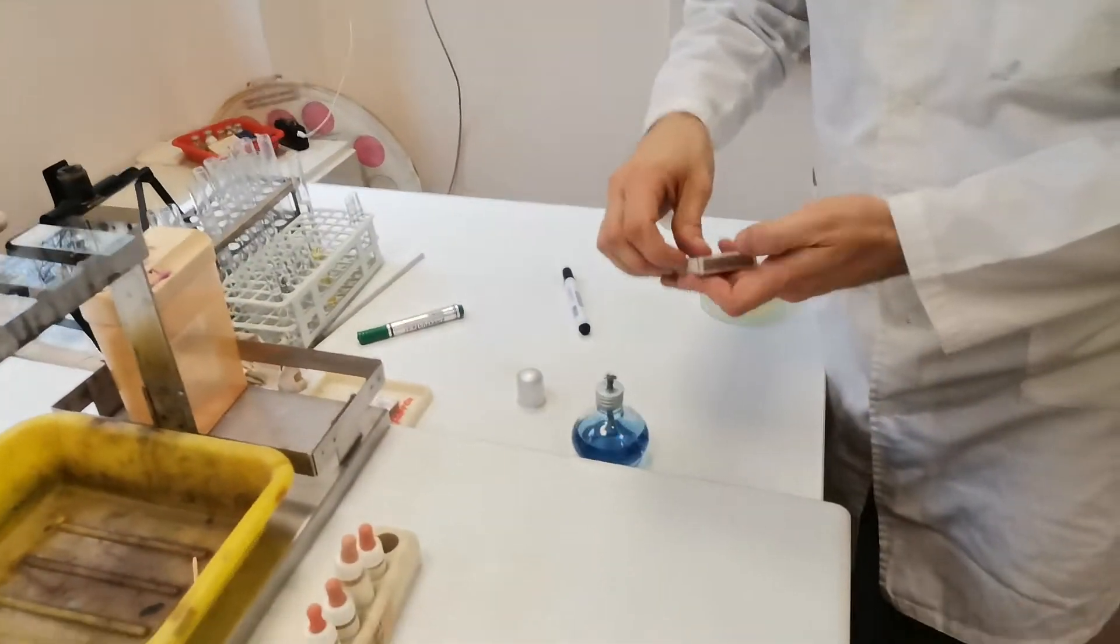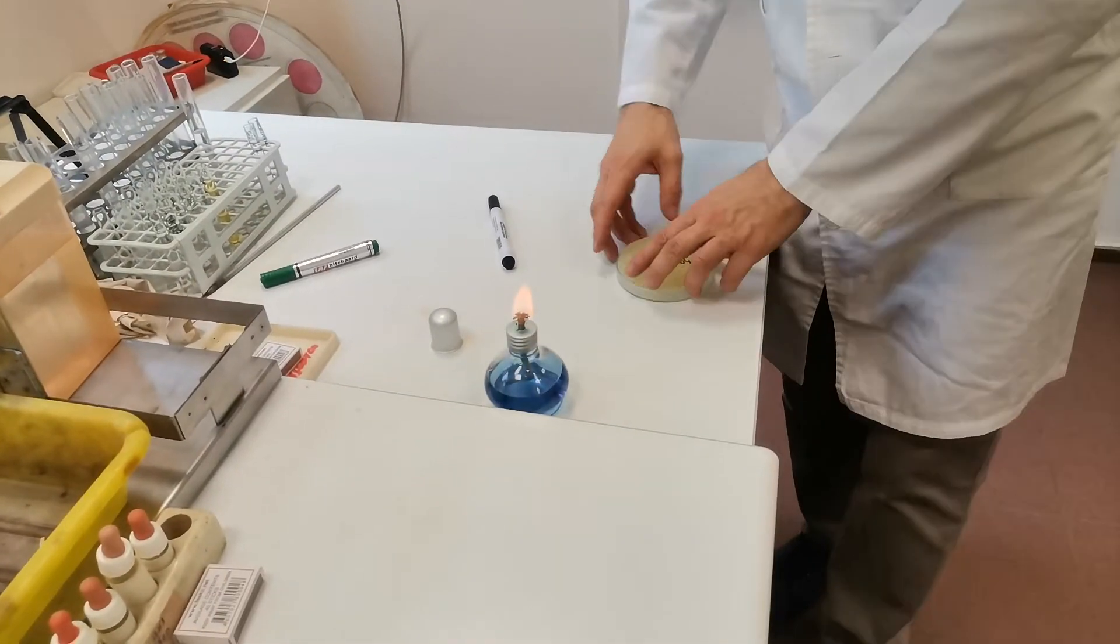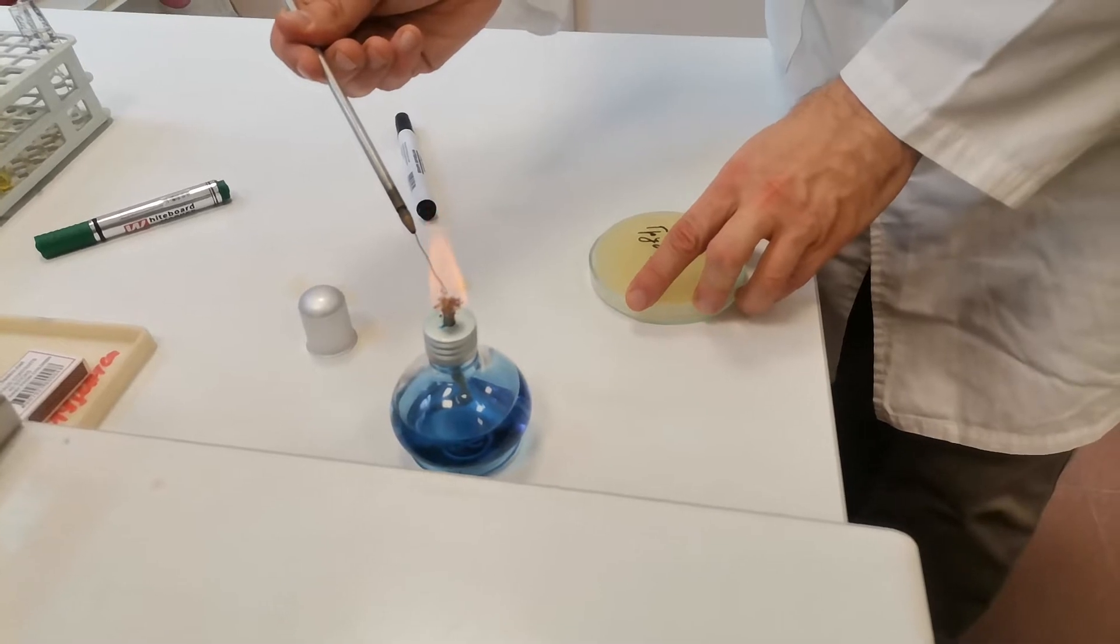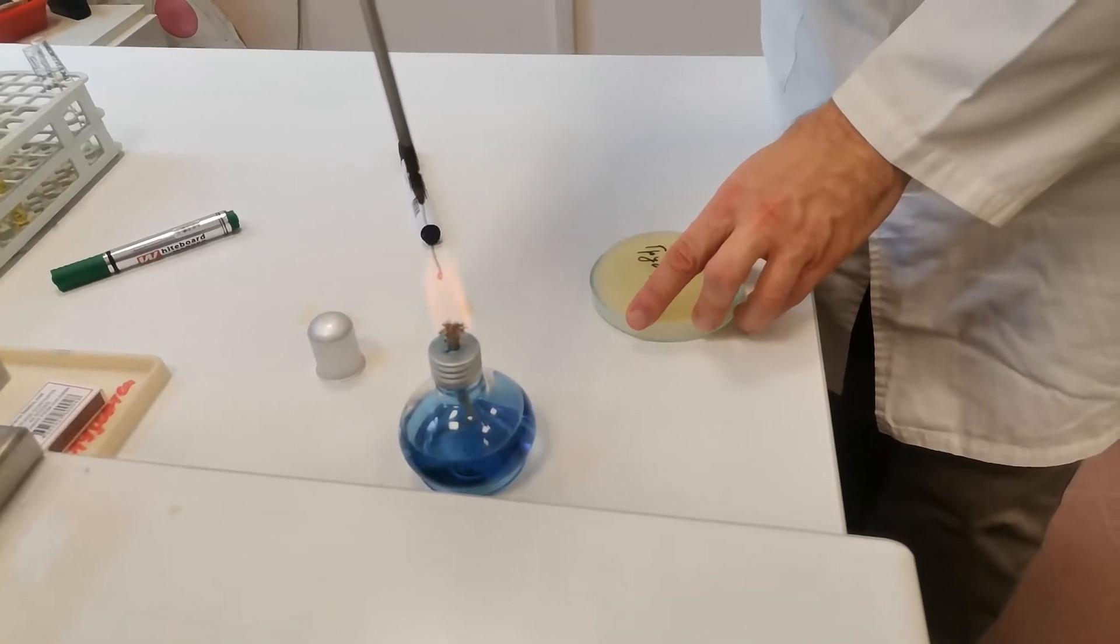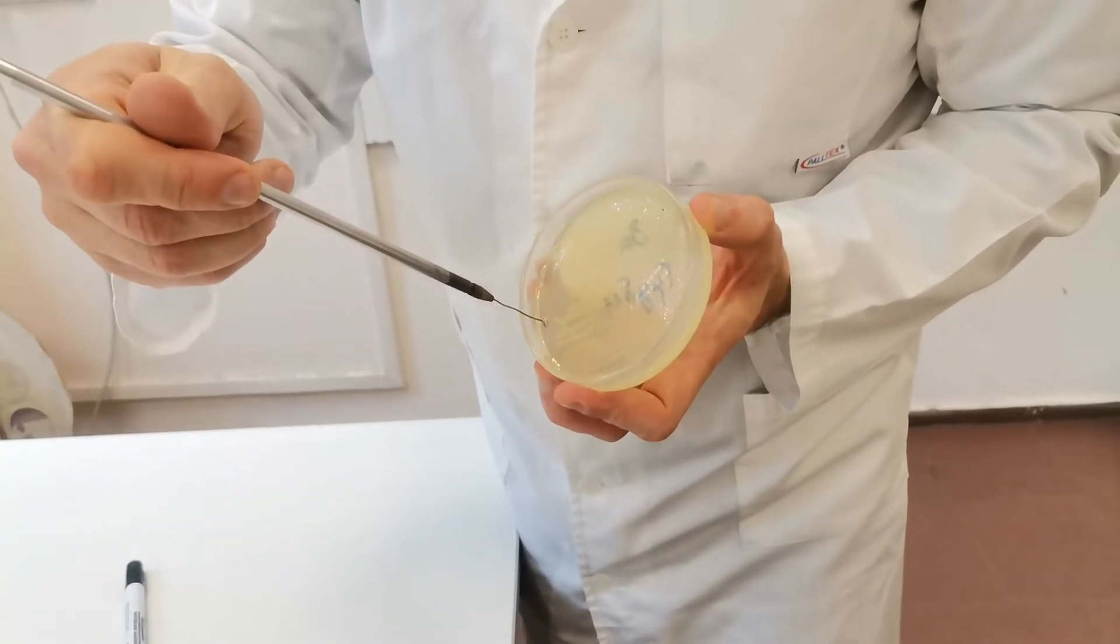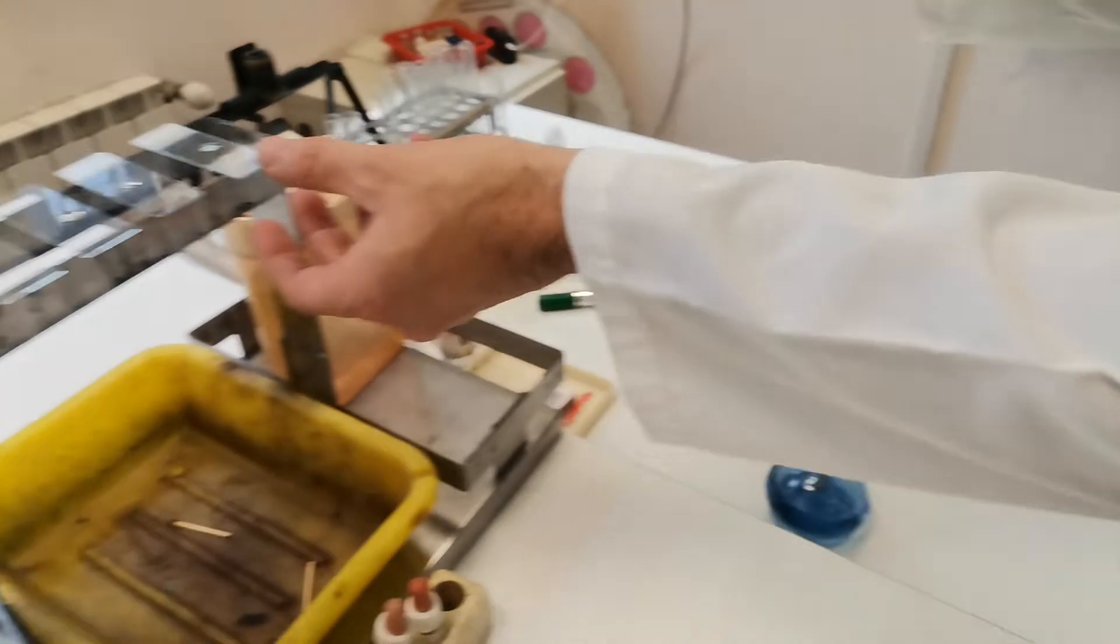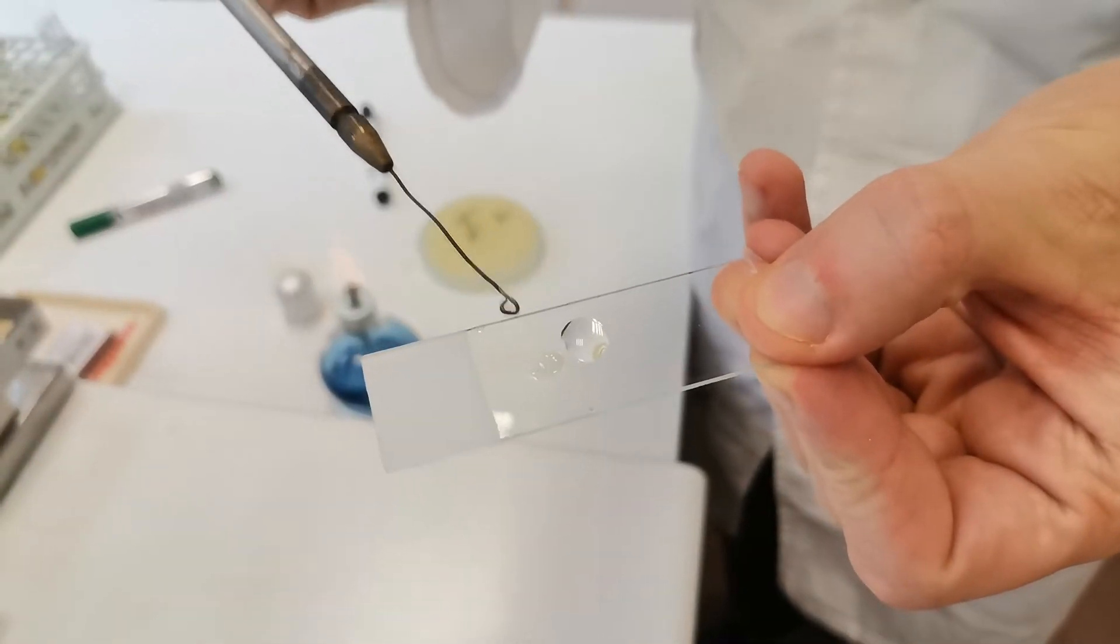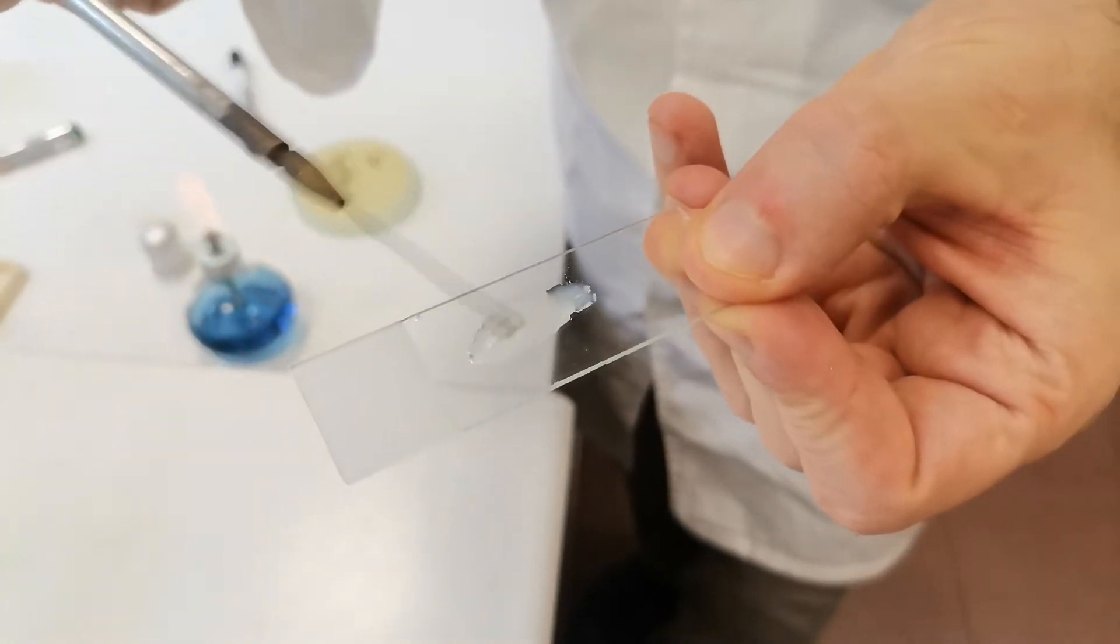Next, I need to start the burner. Sterilize the loop by holding it first in the lower part of the flame where it is cooler and then holding it vertically in the upper, hotter part of the flame until the wire turns red. Then, it must be cooled down by pressing into the agar. Then we will take some of the pure culture. First, I will start with the negative control with the saline. Spread the bacteria near to the drop and then start mixing.